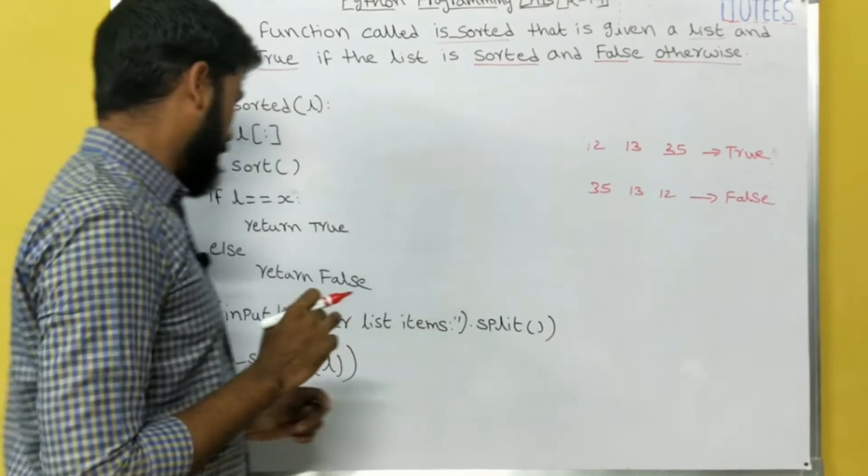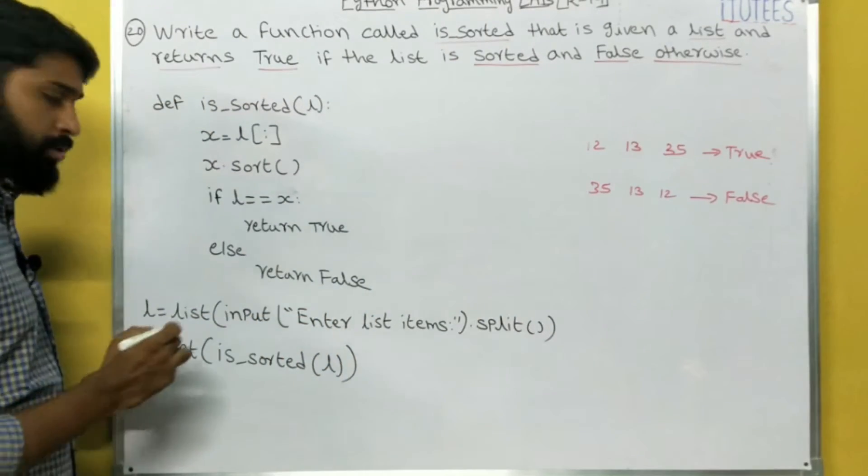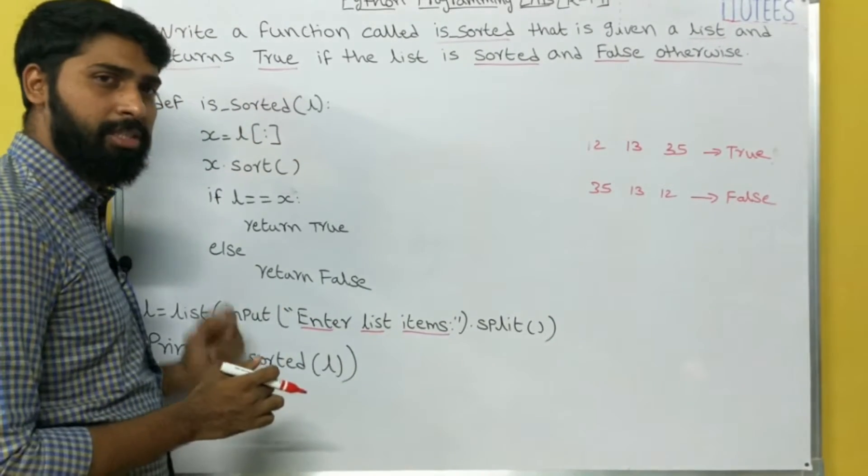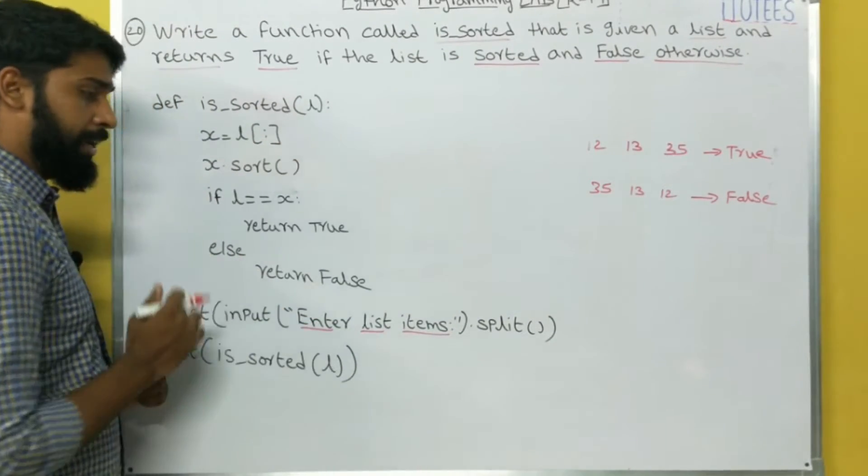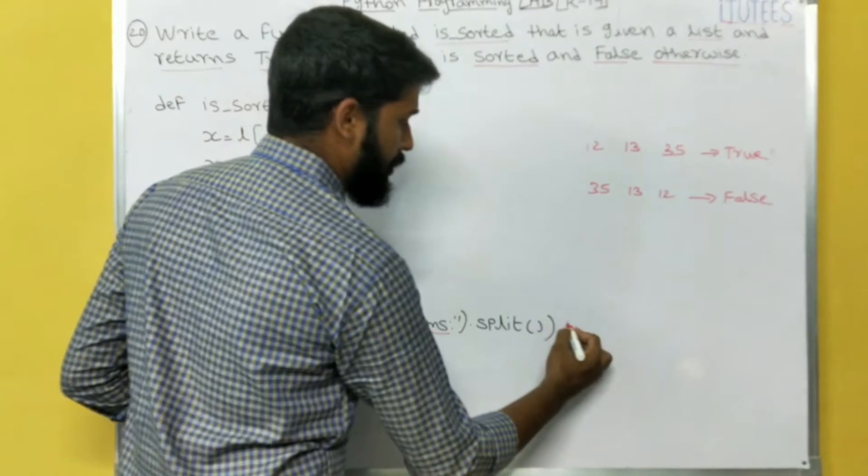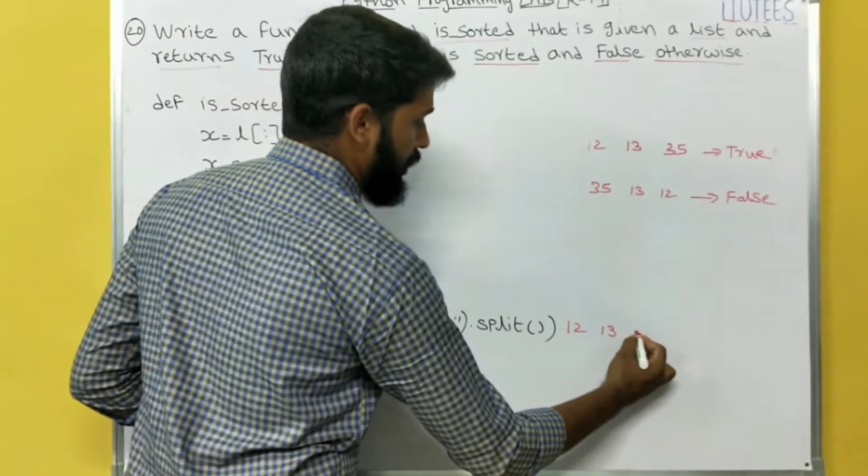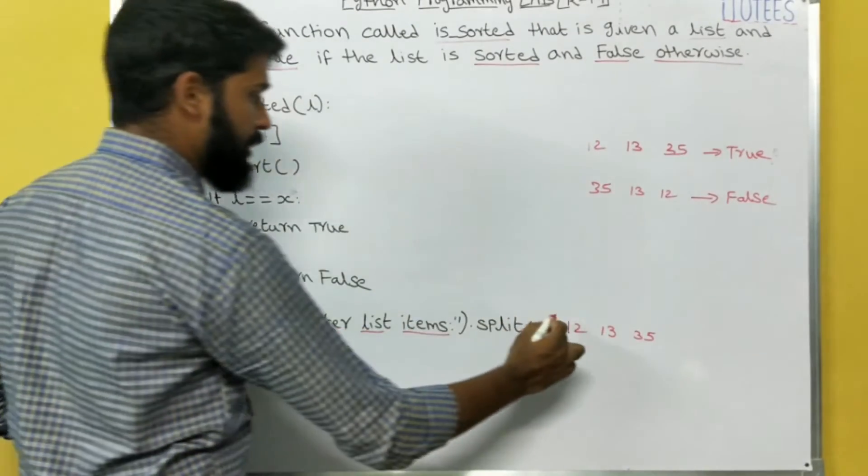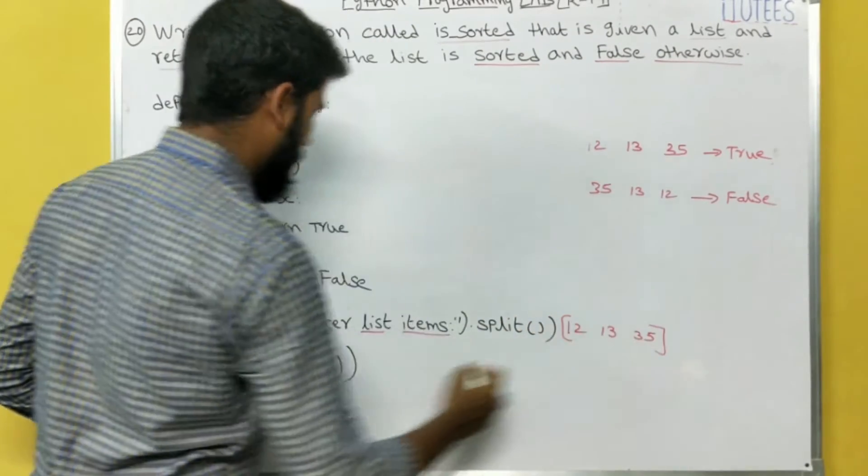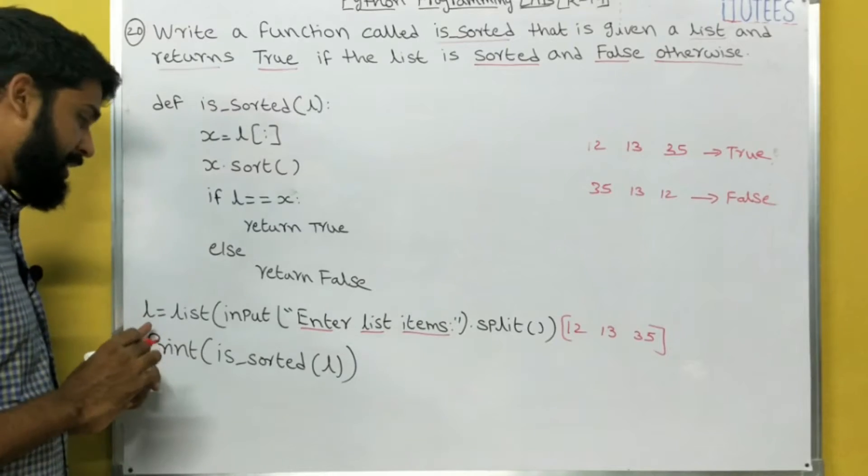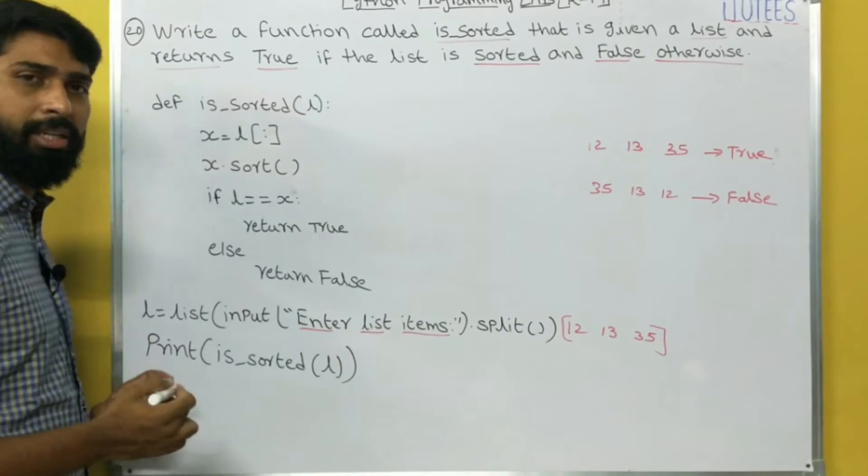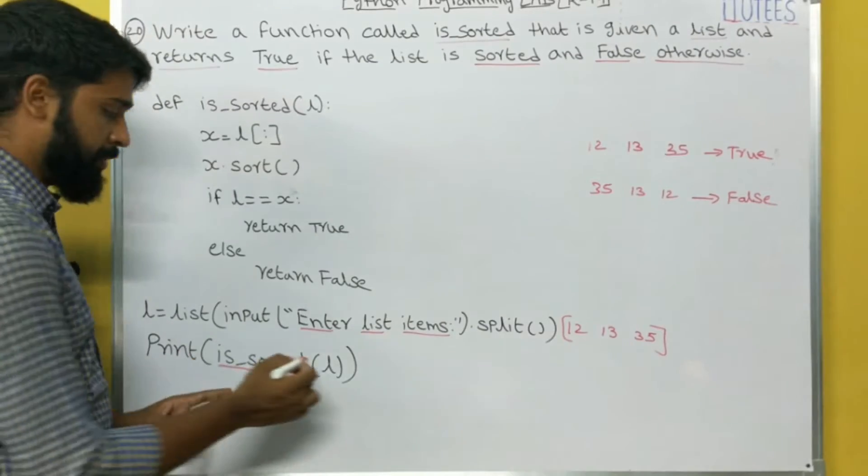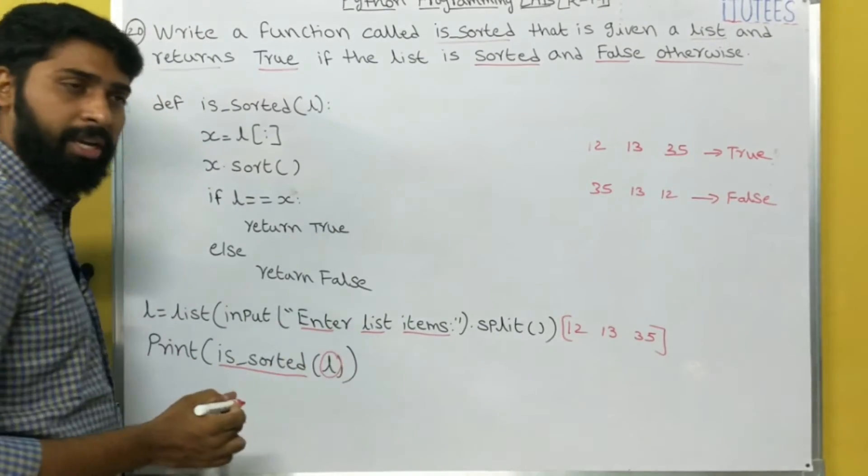Now we see the program. So L equals to list of input 'Enter list items'. So this message is displayed on monitor. Here I am going to give the numbers 12, 13, 35. So those are stored as a list and the list name is L. L equals to 12, 13, 35. Now I call the function isSorted and arguments are L.